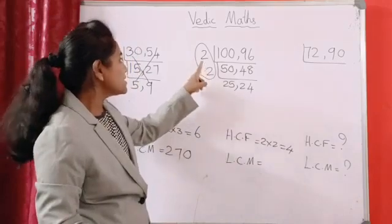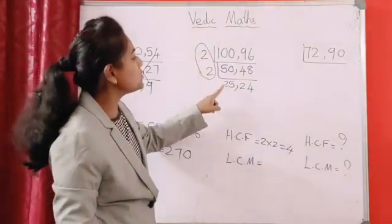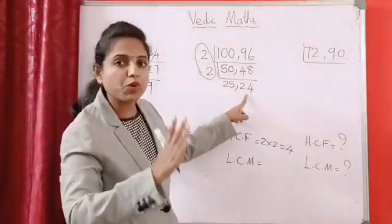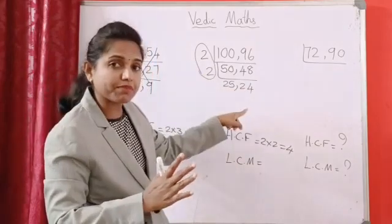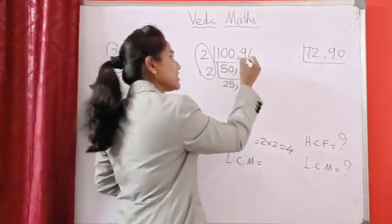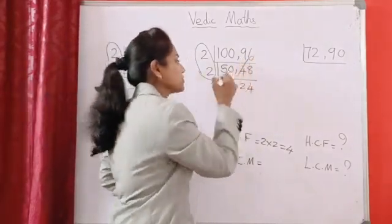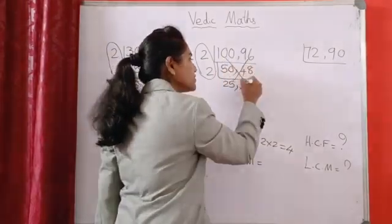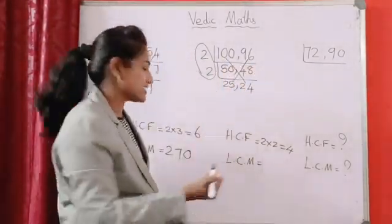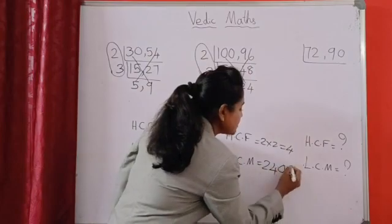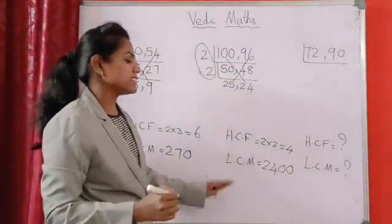LCM, no need to multiply 2 into 2 into 25 into 24. It's taking more time. So, what is the shortcut? We can multiply 96 into 25 or 100 into 24. 100 into 24, very easy. So, 24 double 0, 2400 is LCM.